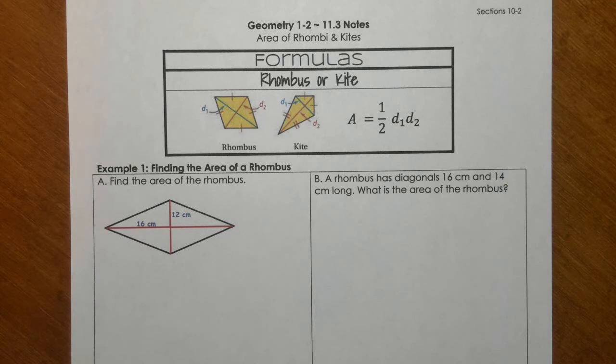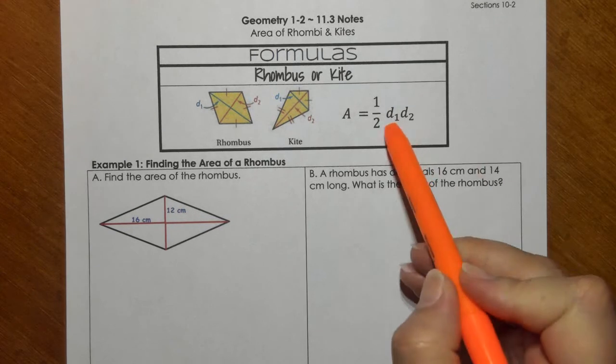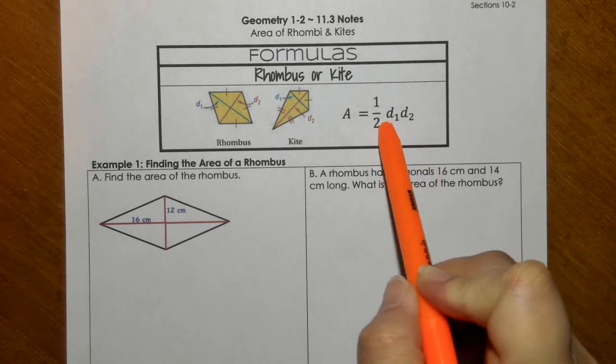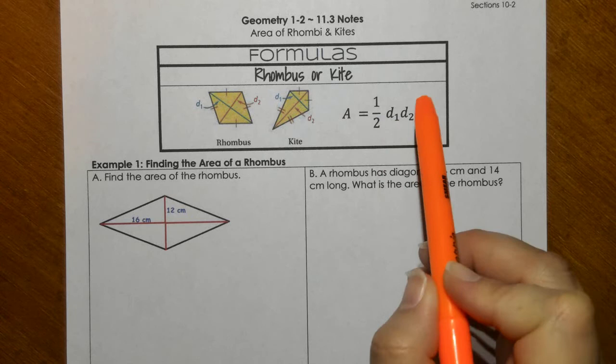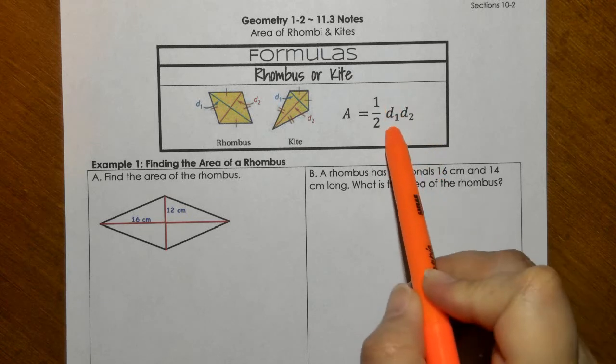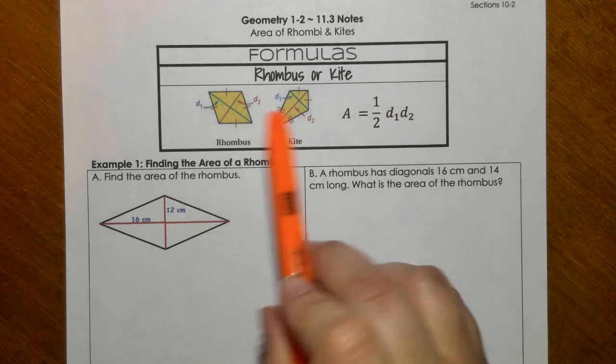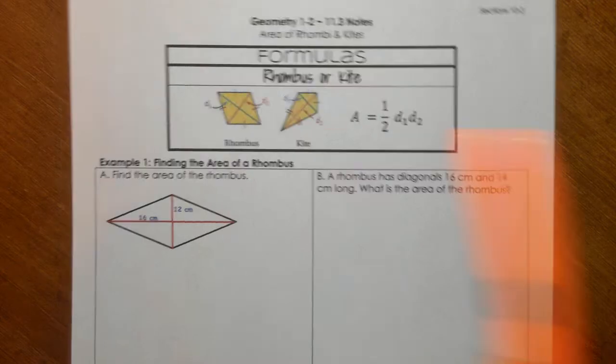So example 1, finding the area of a rhombus. You'll notice in the formula, we have a D1 and a D2. That's diagonal 1 and diagonal 2. We multiply those together, we divide it by 2, and that is our area for both kites and rhombi.